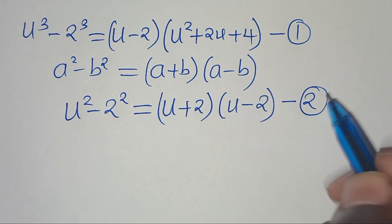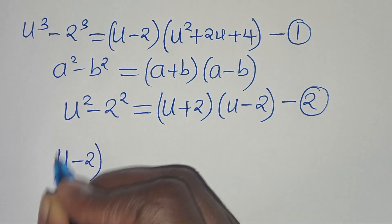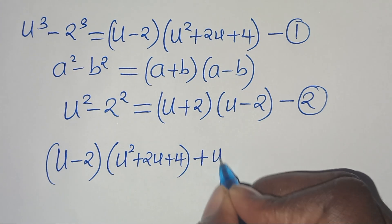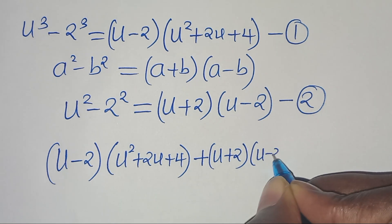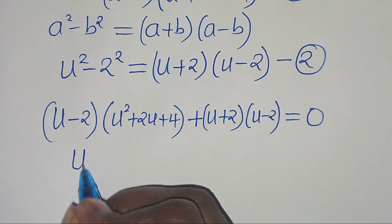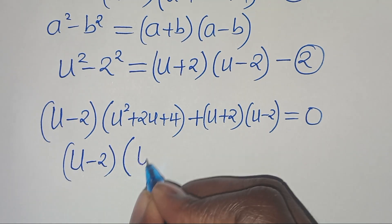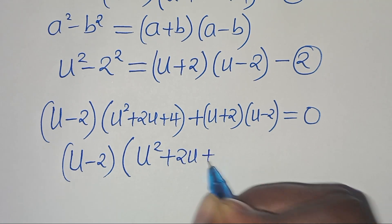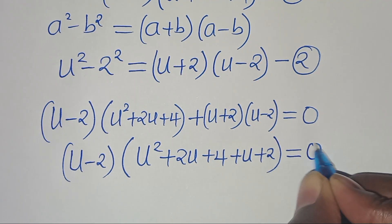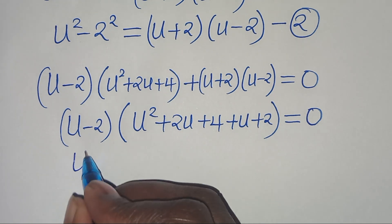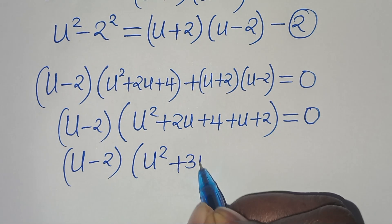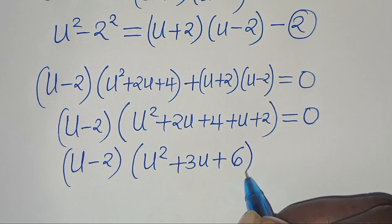Combining equations 1 and 2, we have (u - 2)(u² + 2u + 4) + (u + 2)(u - 2) = 0. Factoring out the common factor (u - 2), we get (u - 2)(u² + 2u + 4 + u + 2) = 0, which simplifies to (u - 2)(u² + 3u + 6) = 0.